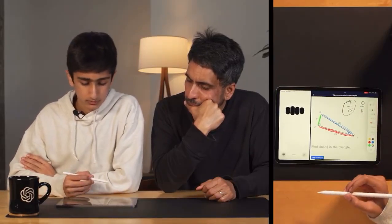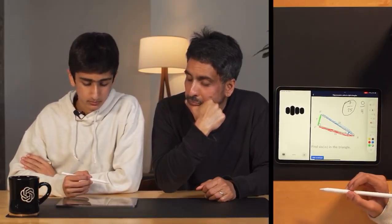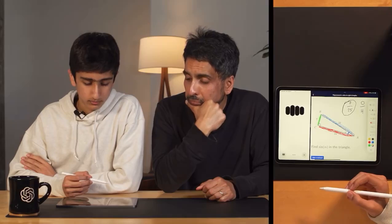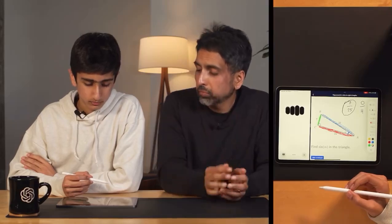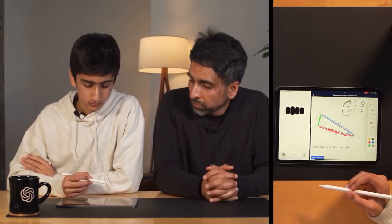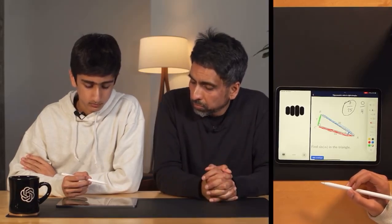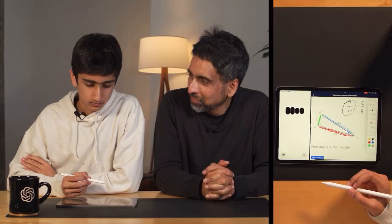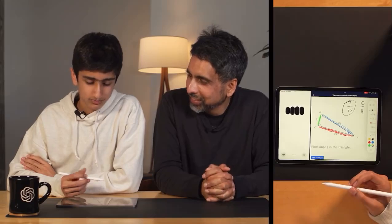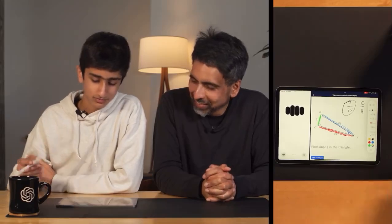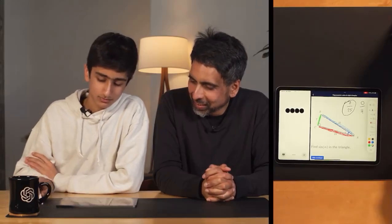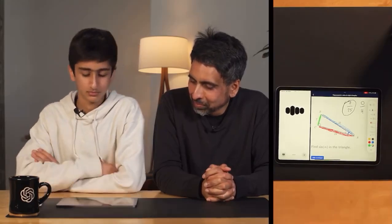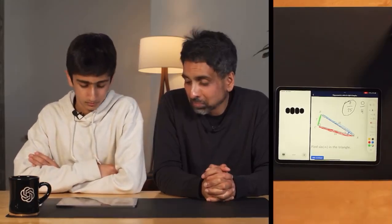Excellent work, that's correct. Sine alpha equals 7 over 25. You did a great job identifying the sides and using the sine formula. If you have any more questions, feel free to ask.